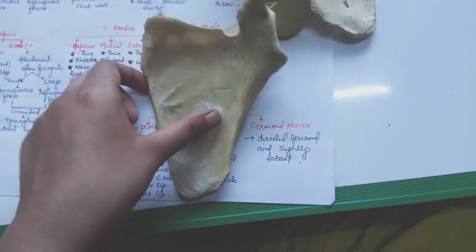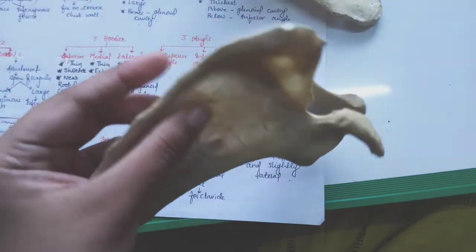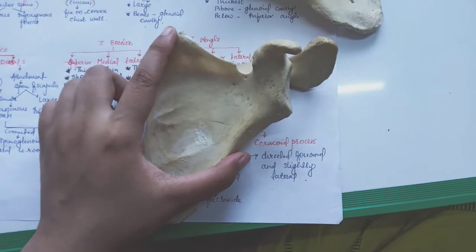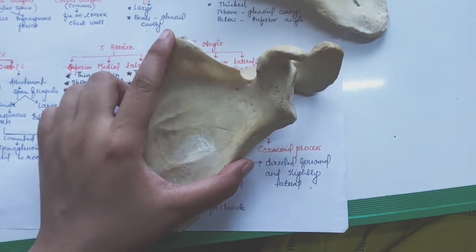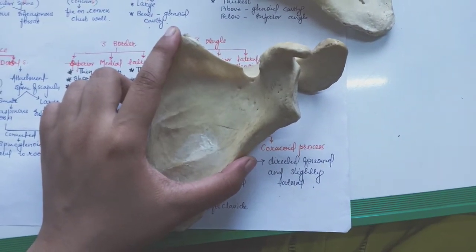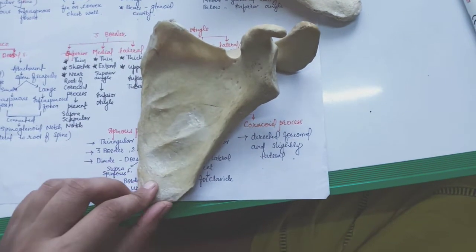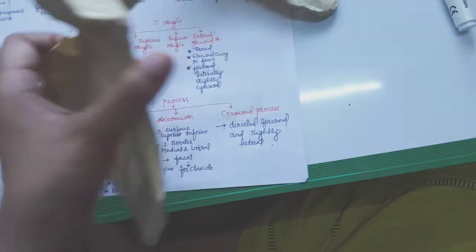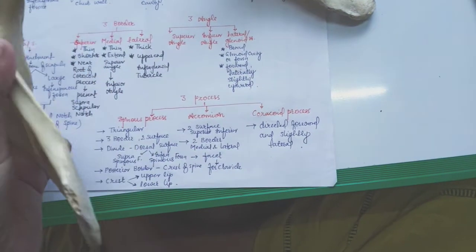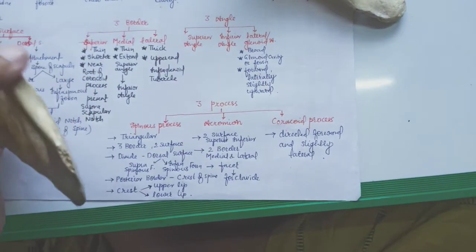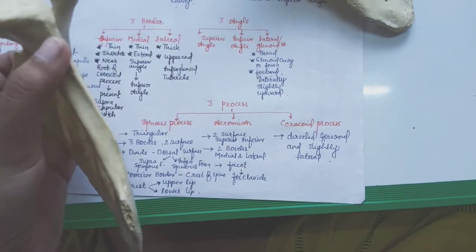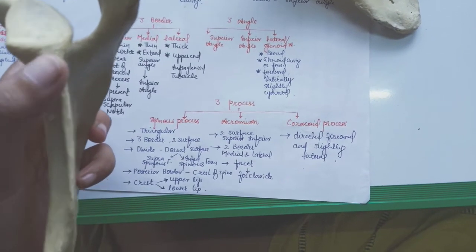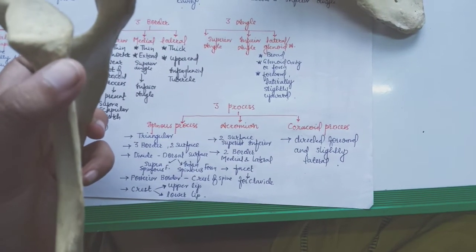The medial border is also thin and it extends from the superior angle up to the inferior angle. This one is the lateral border — the lateral border is thick, and its upper end contains the infraglenoid tubercle.